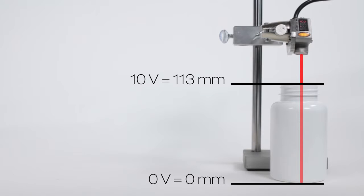In this example, the bottom of the bottle is set as the zero-volt signal, and the top of the bottle will be a 10-volt signal.